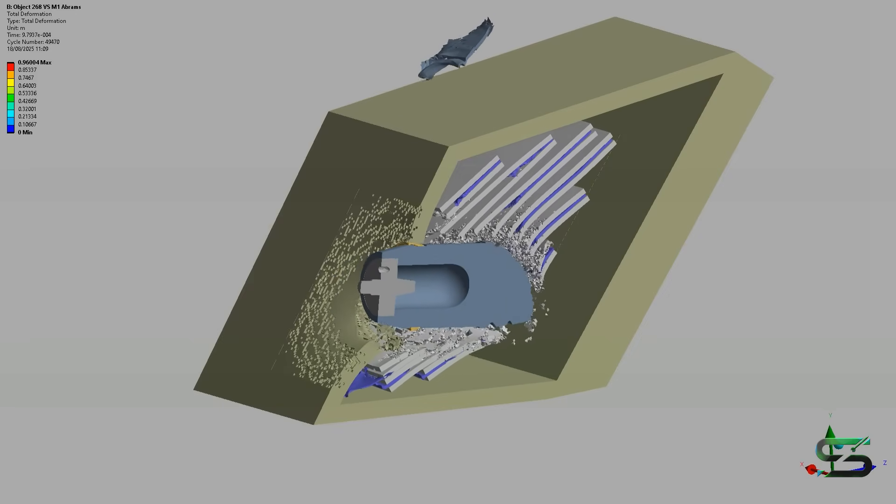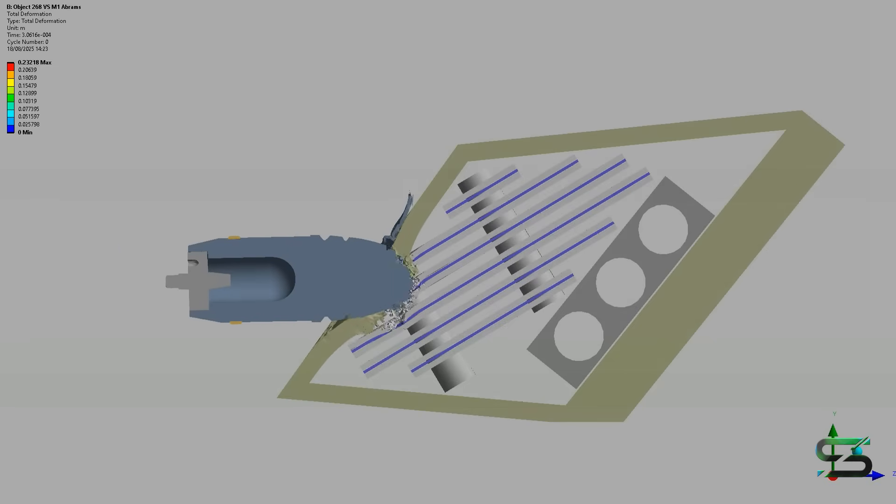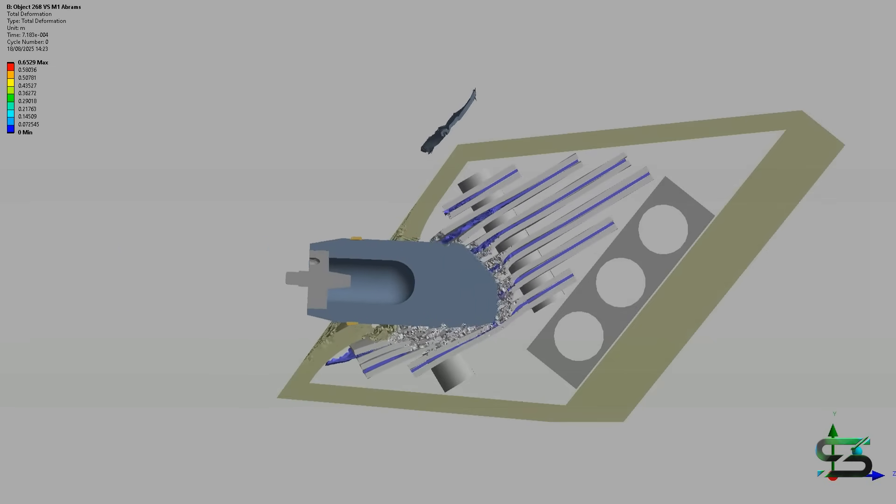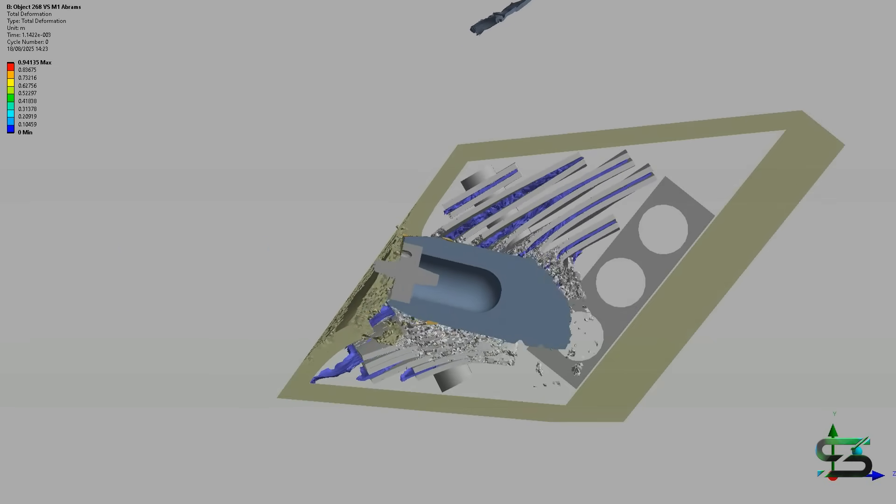Firing a 25kg AP round at 700m per second, the projectile generates enormous kinetic energy and exerts tremendous force on impact.